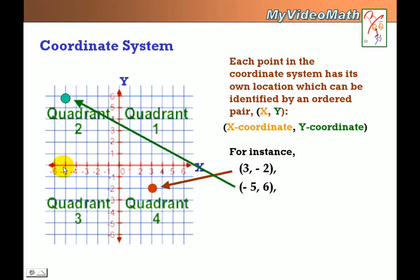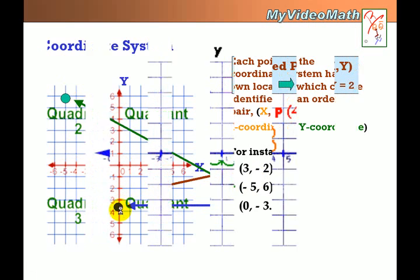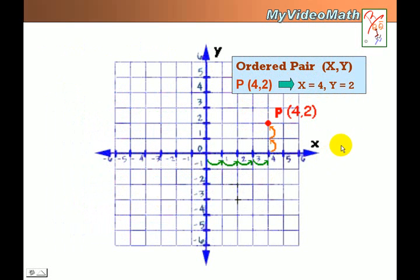Negative 5 and 6. 0 and negative 3.5. Ordered pair, x and y, in parentheses, always comes two numbers, x and y.